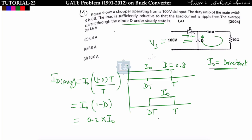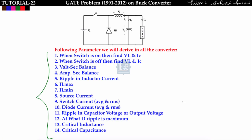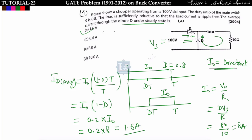Average diode current i_D_avg = i_naught × (1−D). With D = 0.8, this gives 0.2 × i_naught. To find i_naught: i_naught = V_naught/R = D·V_s/R = (0.8 × 100)/10 = 8 ampere. So i_D_avg = 0.2 × 8 = 1.6 ampere. Option A is correct. This was asked in Gate 2004. Just see the waveform and find i_D_avg from the conduction interval.